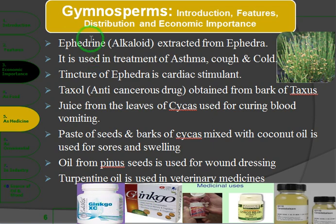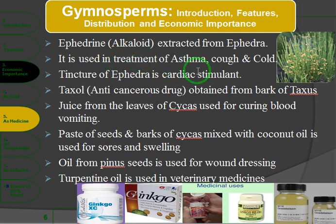As a medicine: an alkaloid extract from Ephedra is widely used in medicine. This was also significant in Pakistan's recent political and legal history — the ephedra case. It is used in the treatment of asthma, cough and cold.